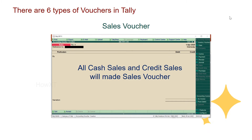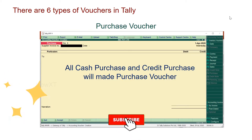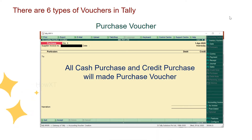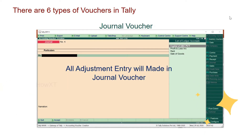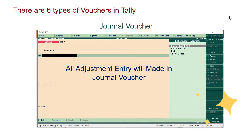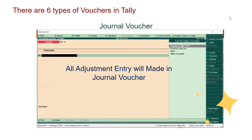Number four: Sales voucher — all cash sales and credit sales will be made in the sales voucher. Number five: Purchase voucher — all cash purchases and credit purchases will be made in the purchase voucher. Number six: Journal voucher — all adjustment entries will be made in the journal voucher. For example, if you have furniture and need to record depreciation, that adjustment entry will be made in the journal voucher.